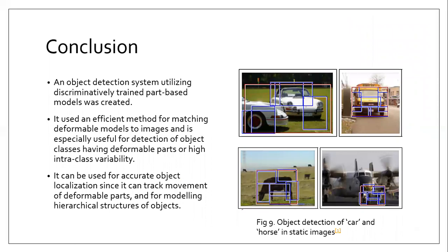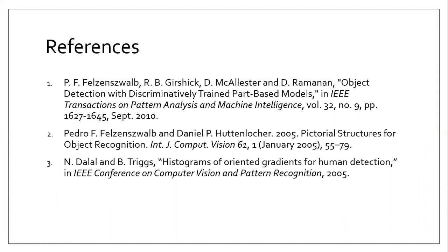To conclude, this object detection system utilizing discriminatively trained part-based models is a very efficient method for matching deformable models to images. It is especially useful for detecting object classes having deformable parts or high intra-class variability. Another advantage is that filters are transferable across different applications — for example, a filter trained to detect a windshield in a car can be reused to detect a windshield in a truck. The filters obtained isolate different aspects of a particular object and can be utilized in further applications. This method also helps in drawing hierarchical structures of objects. These are the references used in making this presentation.